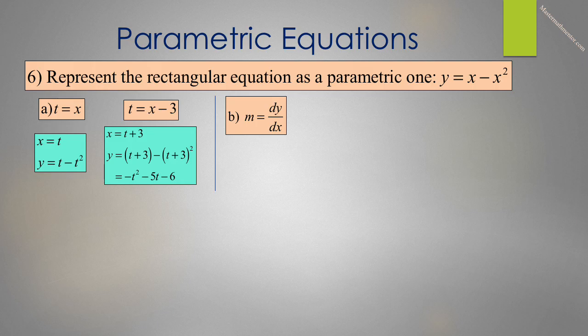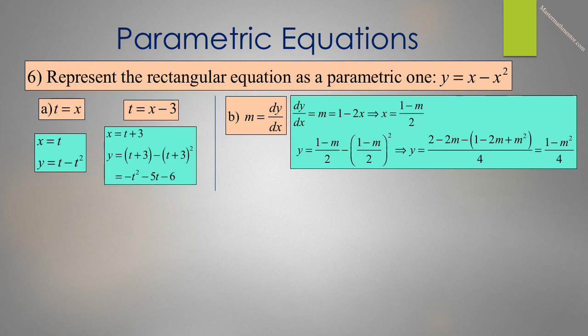There is no reason that we have to use the variable t. Let's do this another way. Let's let m equal dy dx. So dy dx equals m, but we also know dy dx equals 1 minus 2x. Solving for x, we get 1 minus m over 2. We can now replace that in our y equation. So we get y equals 1 minus m over 2 minus quantity 1 minus m over 2 quantity squared. Putting everything over 4, we get y equals 2 minus 2m minus quantity 1 minus 2m plus m squared, all over 4, and that becomes 1 minus m squared over 4.